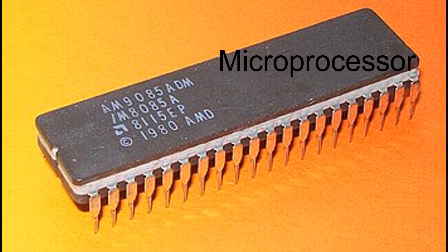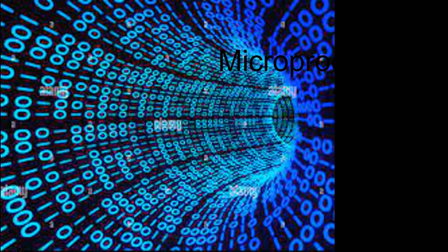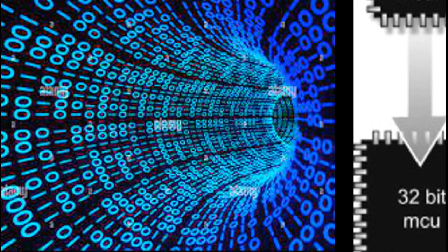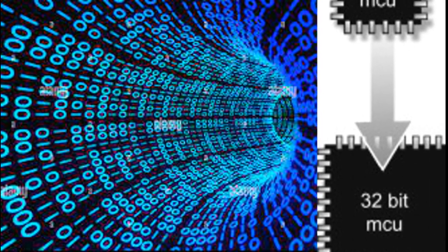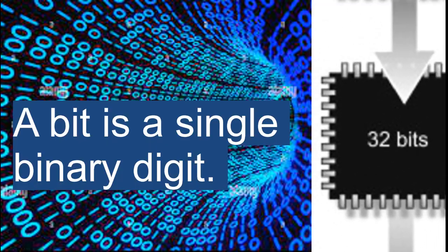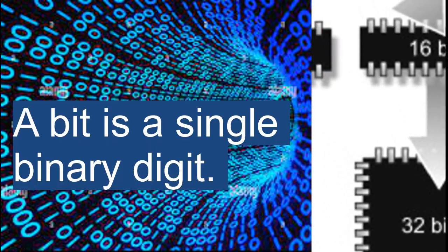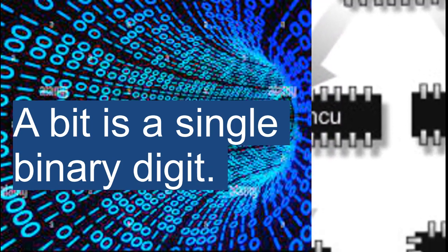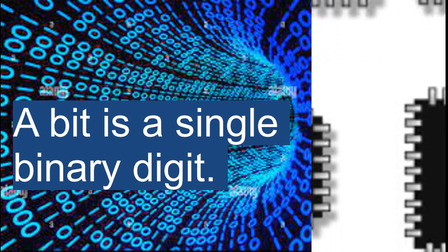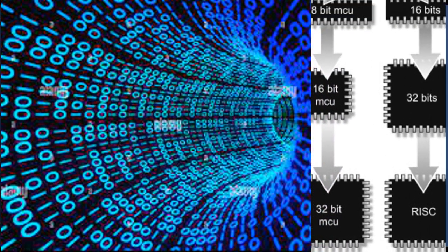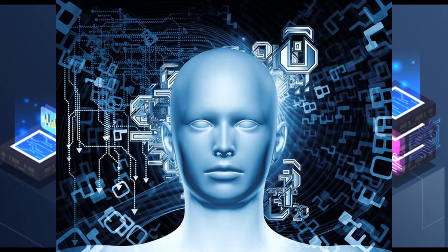Bit: A bit is a single binary digit. Word: A word refers to the basic data size or bit size that can be processed by the arithmetic and logic unit of the processor. A 16-bit binary number is called a word in a 16-bit processor.